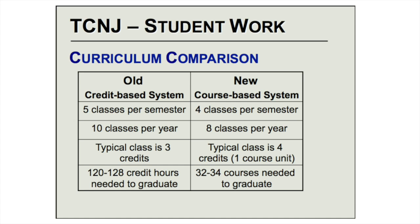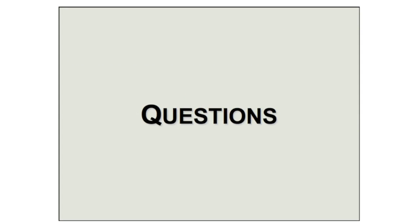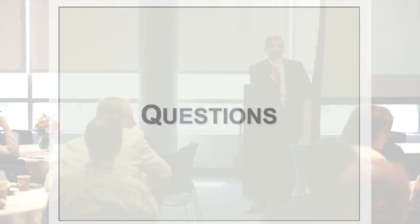Now students take four classes per semester — eight per year. If they overload past four, they need the dean's approval. These courses have been ramped up in terms of intellectual rigor. Students finish 32 course units in four years. Let me take some questions and then move on to the faculty workload piece.